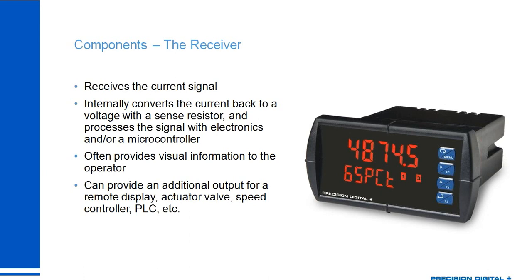Oftentimes either the transmitter or the receiver will have a power supply built into them — that's why sometimes you don't need a separate one. The panel meter shown here, a Precision Digital ProView, if powered from a separate DC or AC voltage, includes an isolated 24-volt power supply for powering your loop. Similarly, there are transmitters powered by an external supply that then provide power to run your loop.